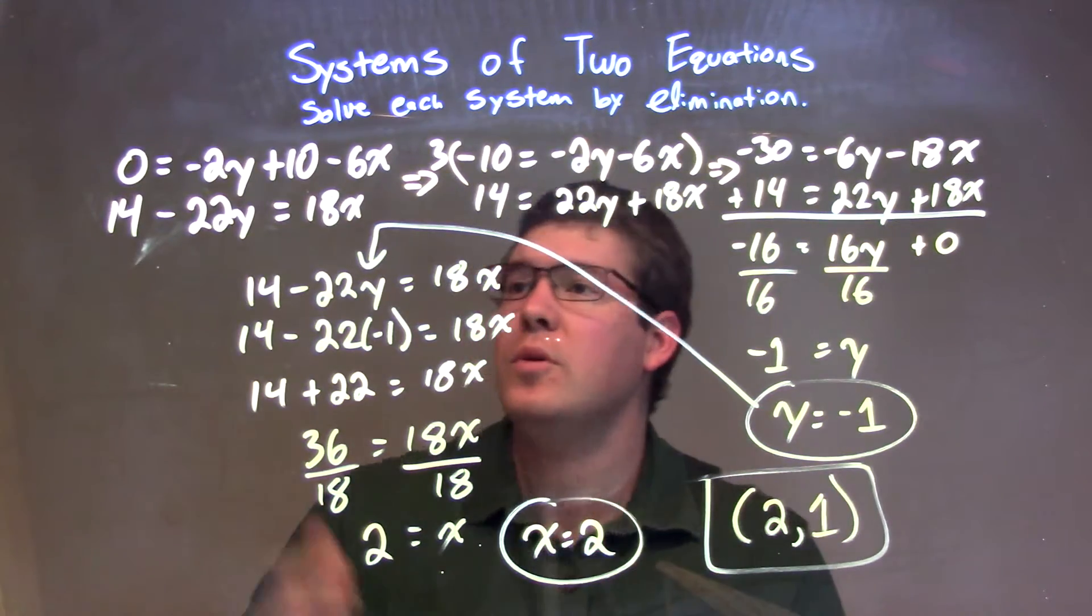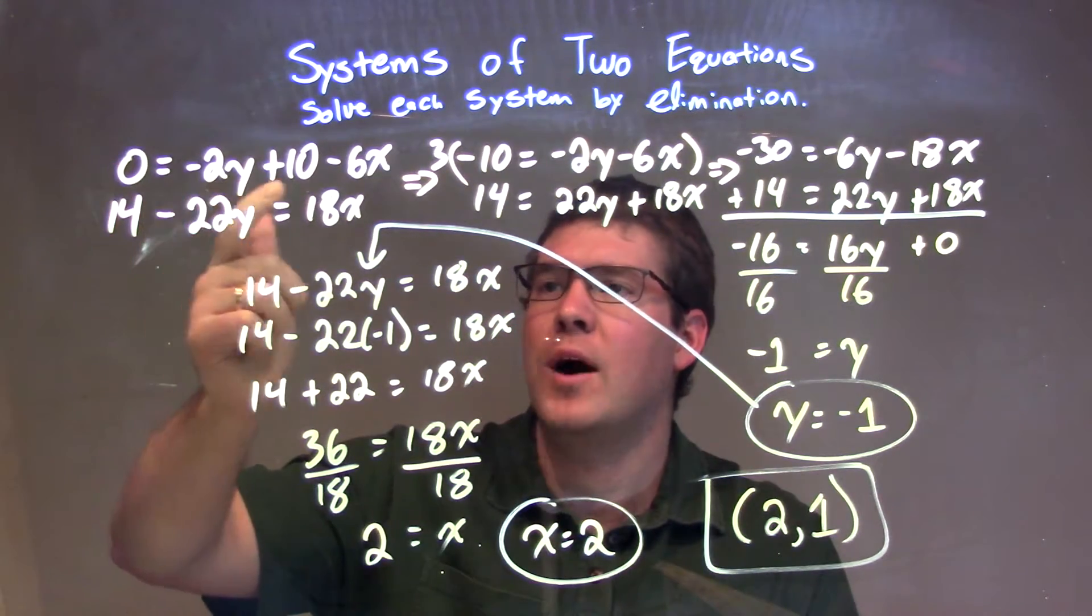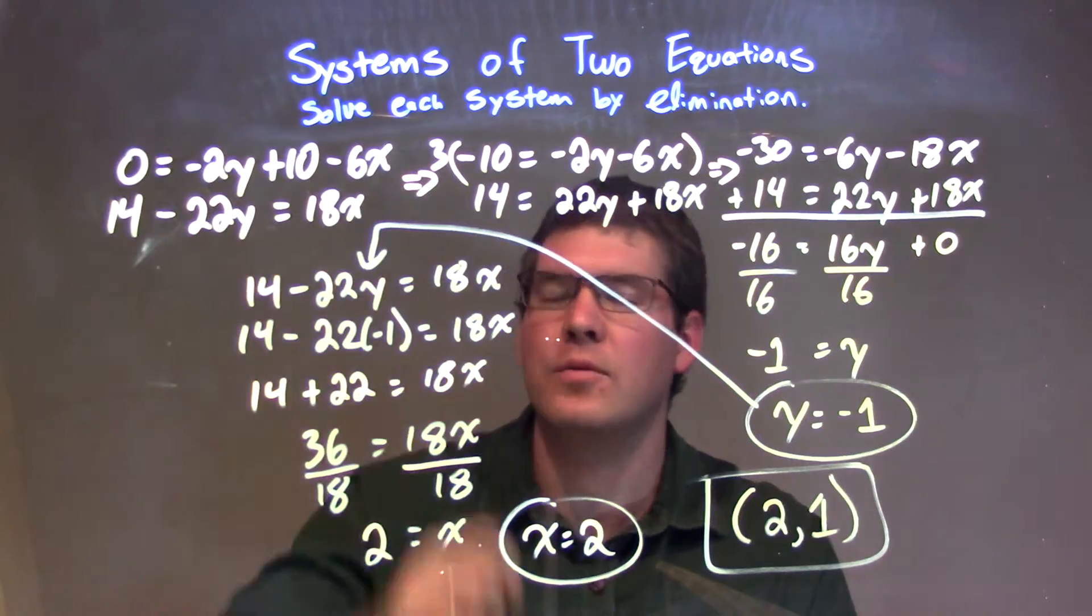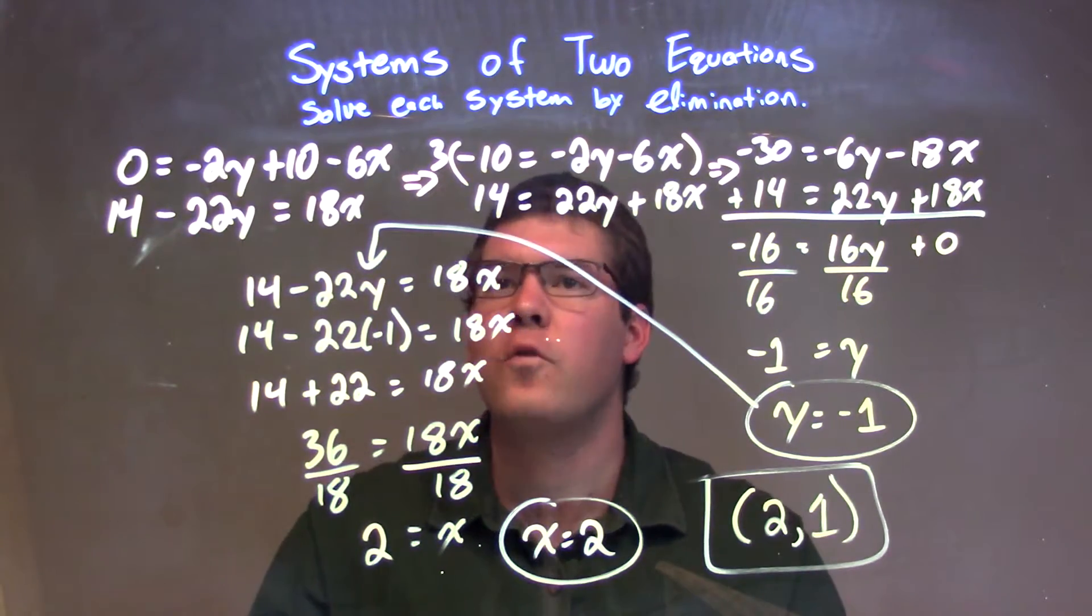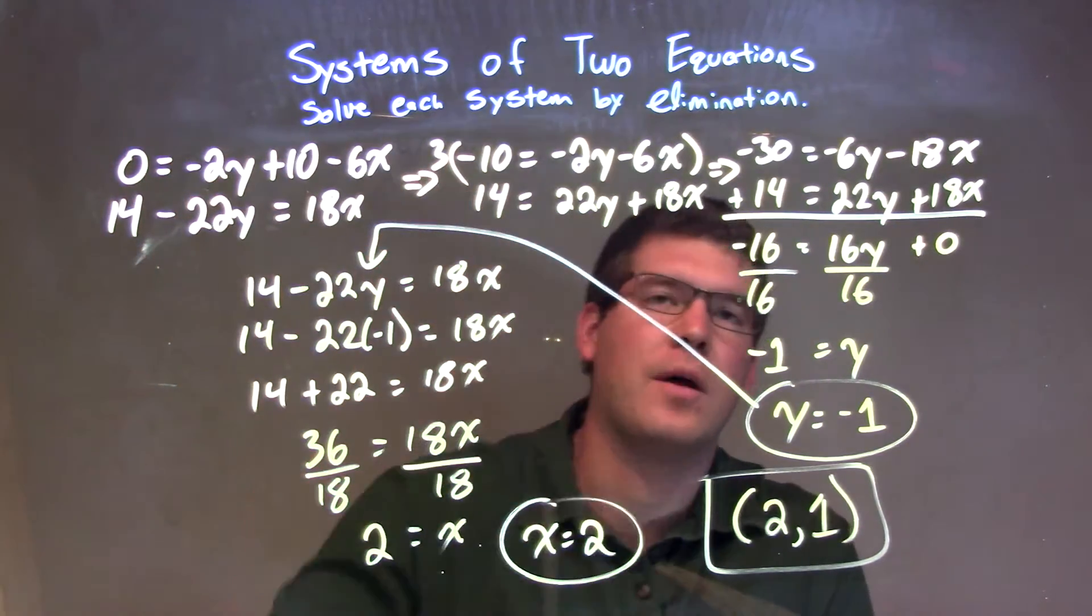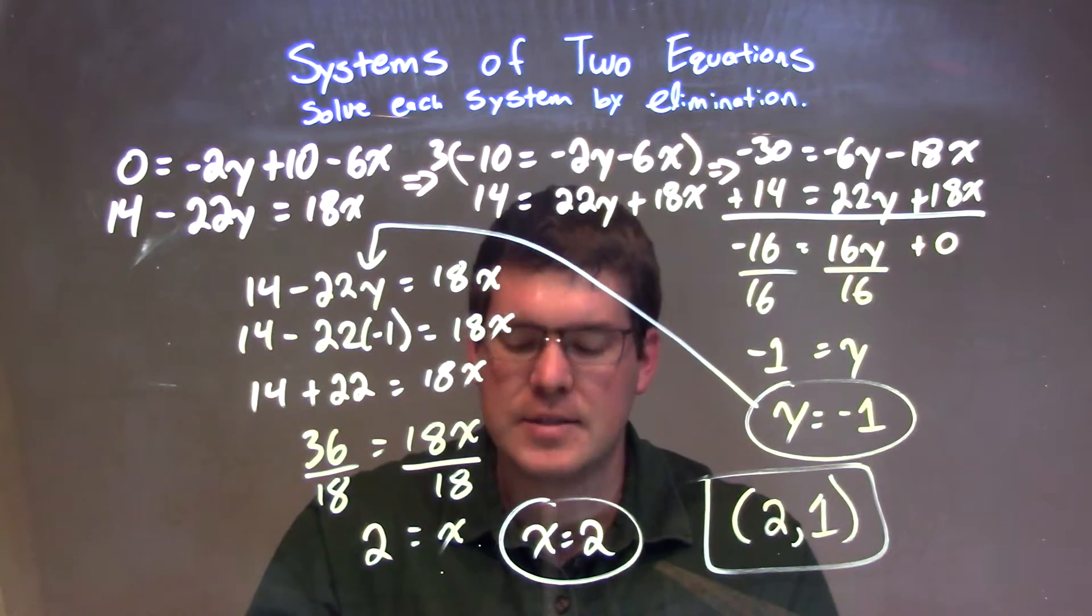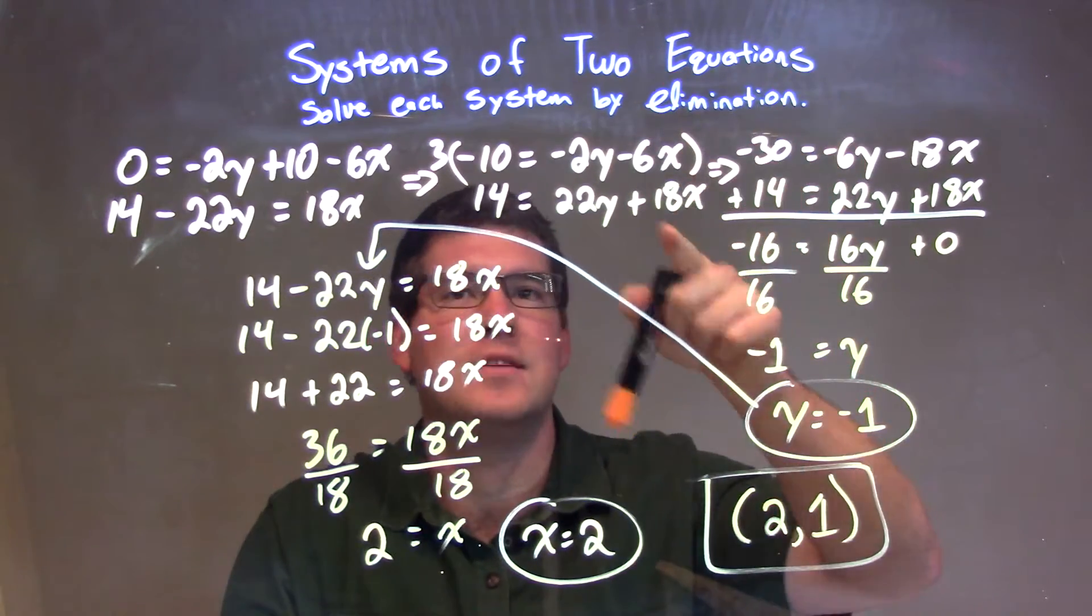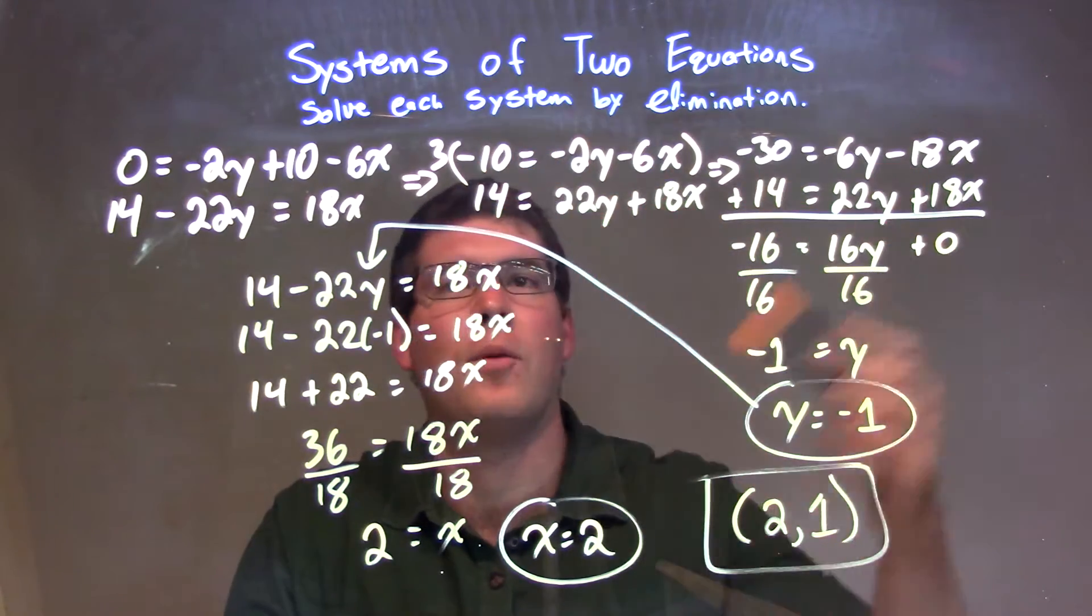Let's recap. We're given our two equations: 0 equals negative 2y plus 10 minus 6x, and 14 minus 22y equals 18x. From there, I rearranged it to have the numbers on the left and the variables on the right. Then I looked at it and said I know I've multiplied negative 6 times 3 to get my 18, so I'm going to multiply the top equation all by 3.